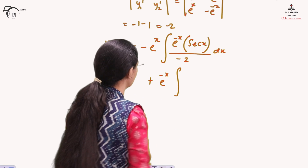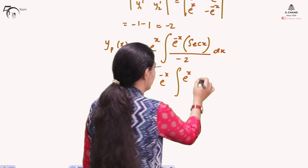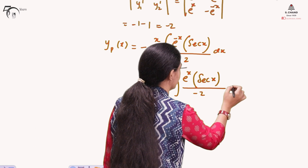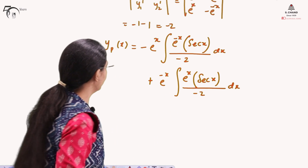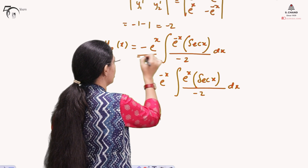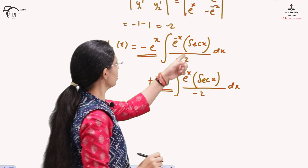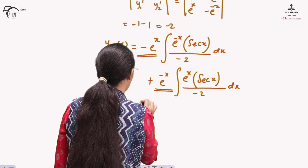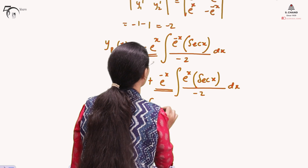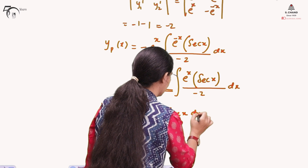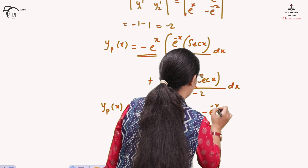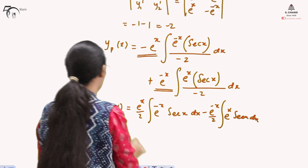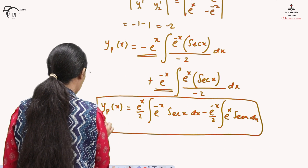The second part of the solution is y₂(x) times the integral of [y₁(x) · r(x) / W] dx, that is e^(−x) times the integral of e^x · sec(x) / (−2) dx. Since constants are outside the integral, yp can be written as (e^x / 2) · ∫e^(−x) sec(x) dx minus (e^(−x) / 2) · ∫e^x sec(x) dx. This is the particular integral.